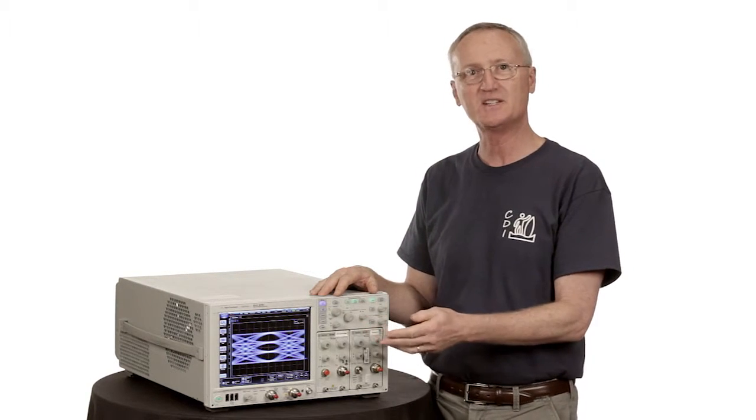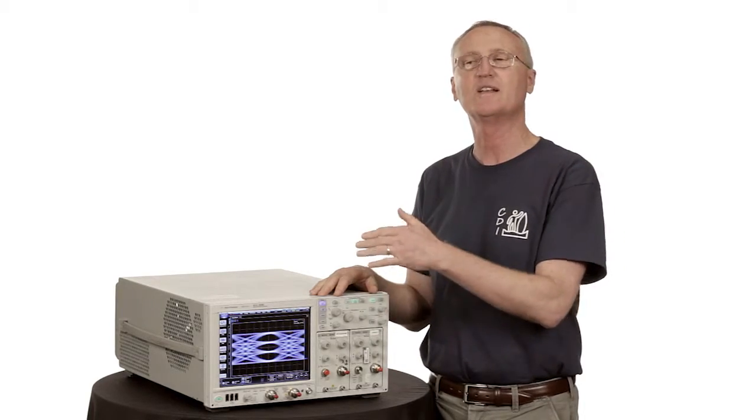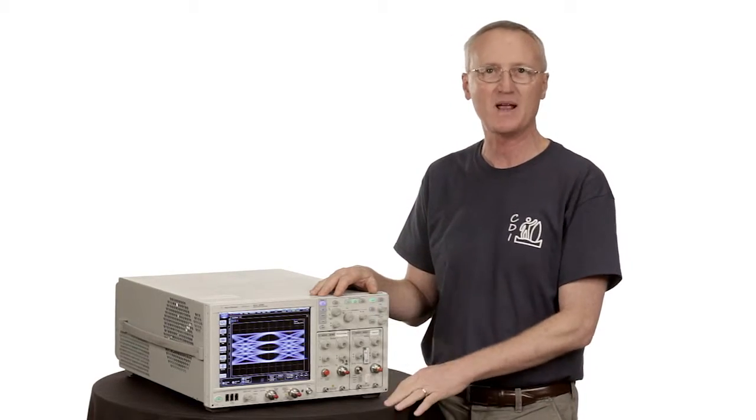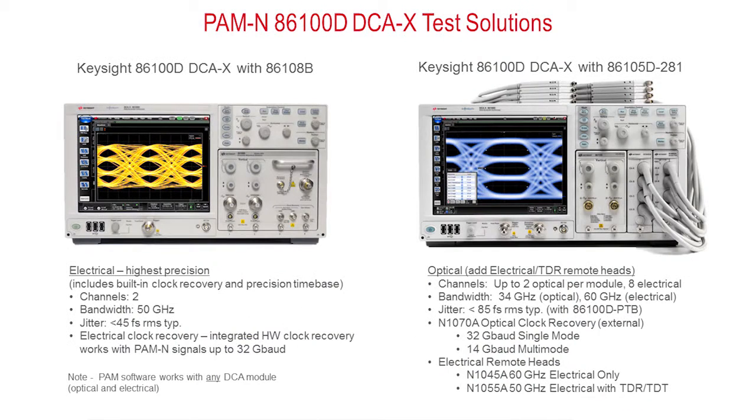But we have to tell the DCA in that case what the baud rate is, which is for PAM-4 half of the data rate.